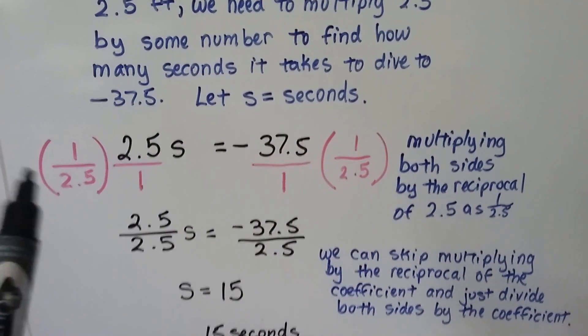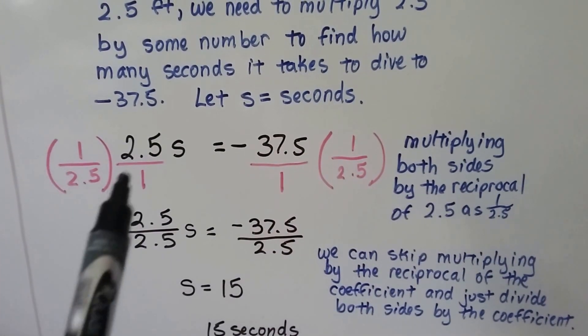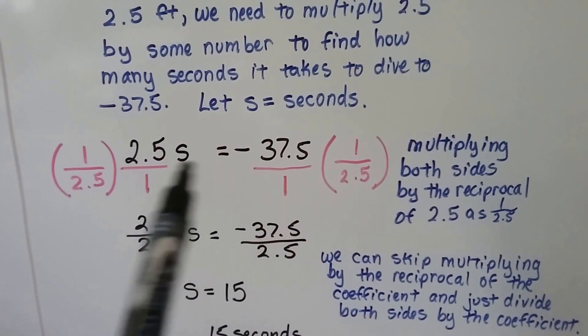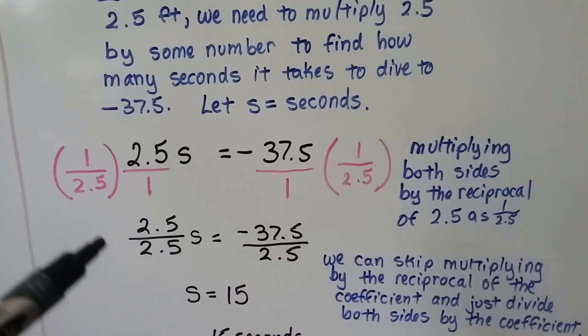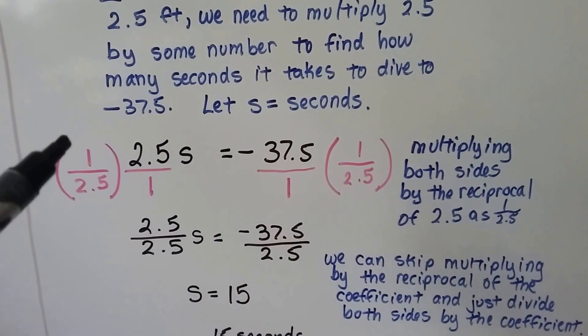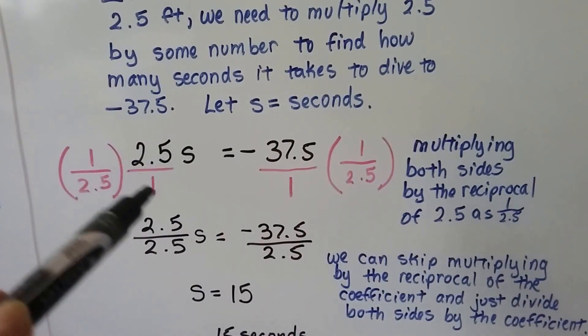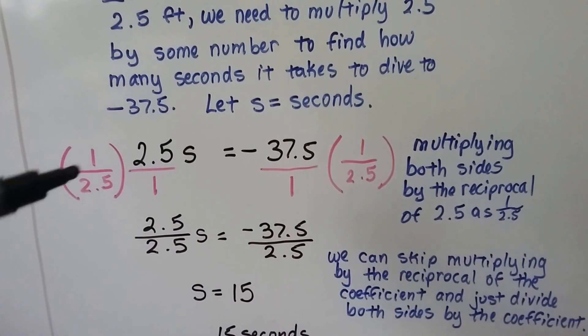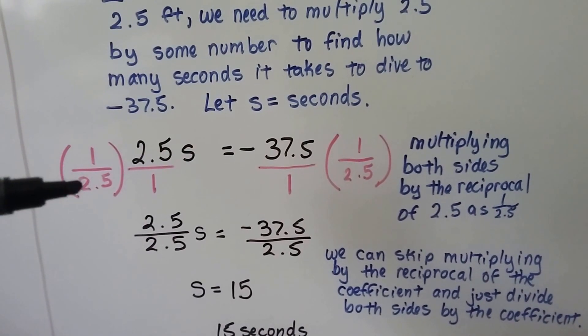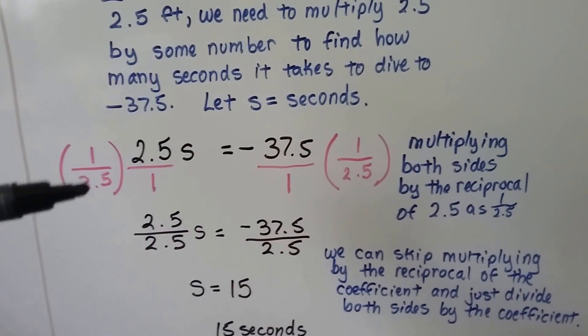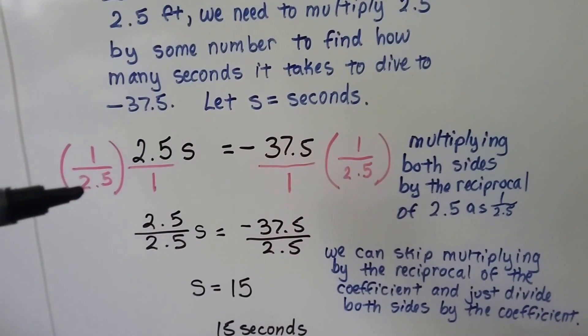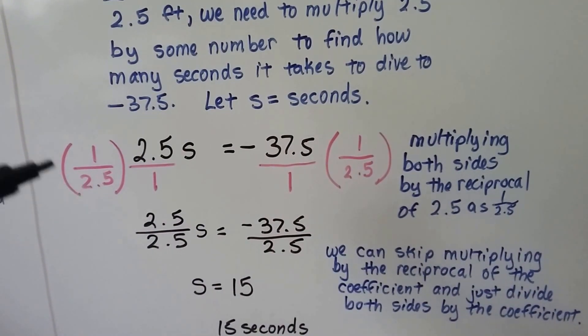So, what we can do is, we can actually write these as a fraction with a 1 underneath them, can't we? And we can multiply both sides of the equation by the reciprocal, the upside-down version of this coefficient right here, as 1 over 2.5. And yes, a denominator or a numerator can have a decimal in it. It can even have a fraction in it.